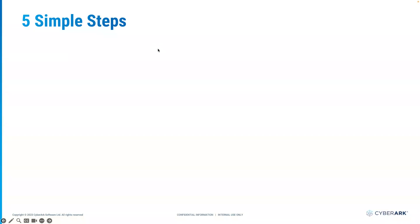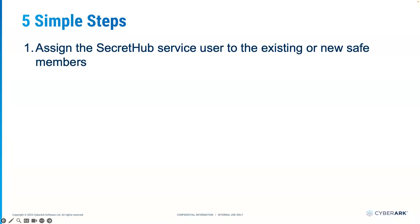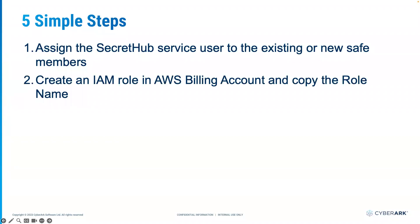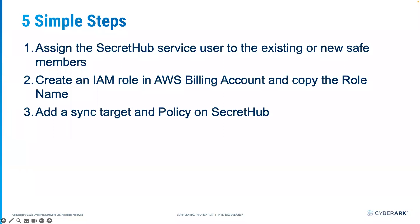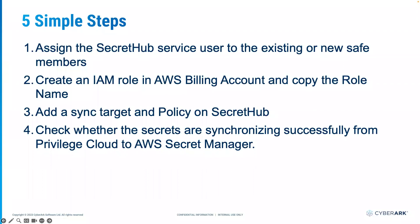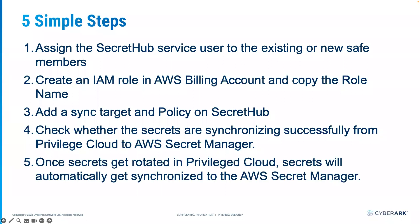Here are five simple steps, starting from the setup all the way to carrying out a quick test. The first thing is you have to assign a CyberArk Secret Hub service user to your existing or new safe. The next step is you have to create an IAM role in your AWS billing account and provide the role name and a few other things to your Secret Hub administrator. As the third step, your Secret Hub administrator will be creating a sync target and the policies. As step number four, we will be checking whether all the secrets in a designated safe are being synchronized successfully to the AWS Secret Manager or not. As the last step, you can rotate the password using password manager, but in today's demonstration, I'll be changing the passwords manually and we will be looking into the AWS Secret Manager to see whether the password values are being successfully updated or not.